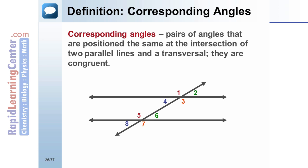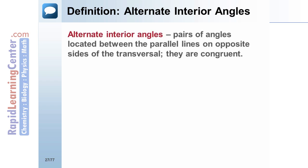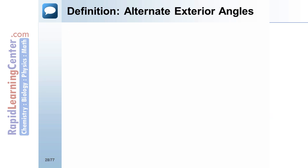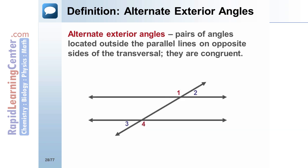Corresponding angles are congruent. Definition: Alternate Interior Angles. Alternate interior angles are pairs of angles located between the parallel lines on opposite sides of a transversal. Alternate interior angles are congruent. Definition: Alternate Exterior Angles. Alternate exterior angles are pairs of angles located outside the parallel lines on opposite sides of a transversal. Alternate exterior angles are congruent.